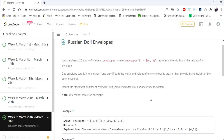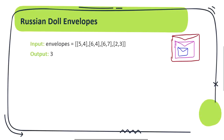Let's understand how we are going to approach this problem. Here are the envelopes with heights and widths. The smallest envelope given is 2,3. Next, if you have to put this envelope into another, both the height and width should be greater than the current envelope size. The next least size is 5,4, so you can put 2,3 into 5,4.